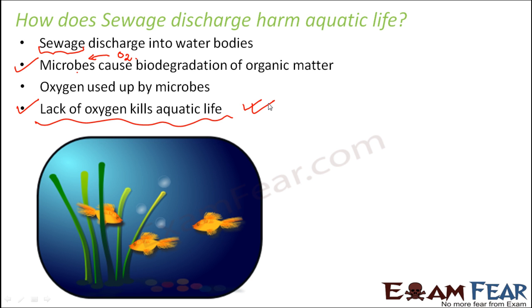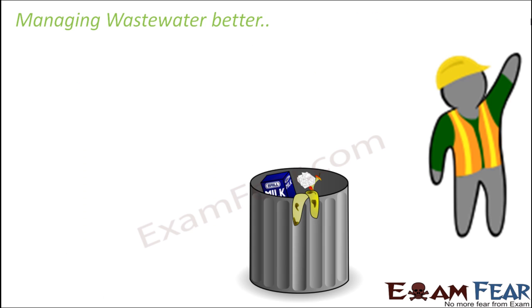Sewage should first be sent to the sewage treatment plant, where the more toxic materials are converted into less toxic materials. In fact, the water which contains so much toxicity gets converted into comparatively cleaner water, and then it is disposed off into water bodies. So we saw how we have nicely utilized the wastewater by treating it in the sewage treatment plants.